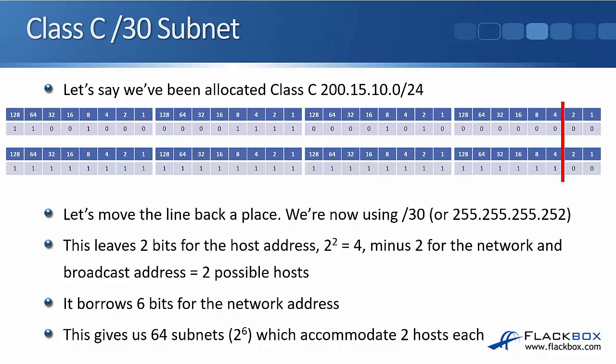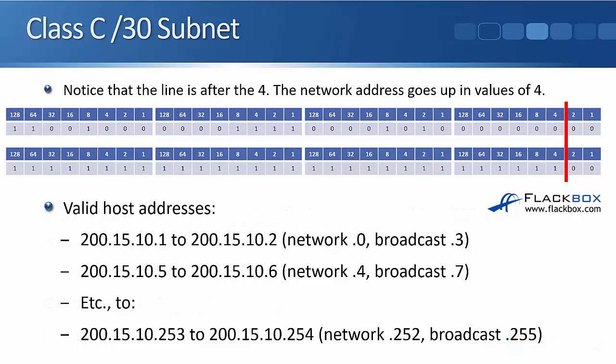It borrows six bits for the network address: 2, 4, 8, 16, 32, 64 — so 64 subnets, which can accommodate two hosts each. The valid addresses on the first subnet: the network address is 200.15.10.0 and the broadcast address is 200.15.10.3, with valid host addresses of .1 and .2. The next subnet is 200.15.10.4 to .7, with valid addresses .5 and .6. The next subnet network is .8, valid addresses 9 and 10, and broadcast is .11, and so on.